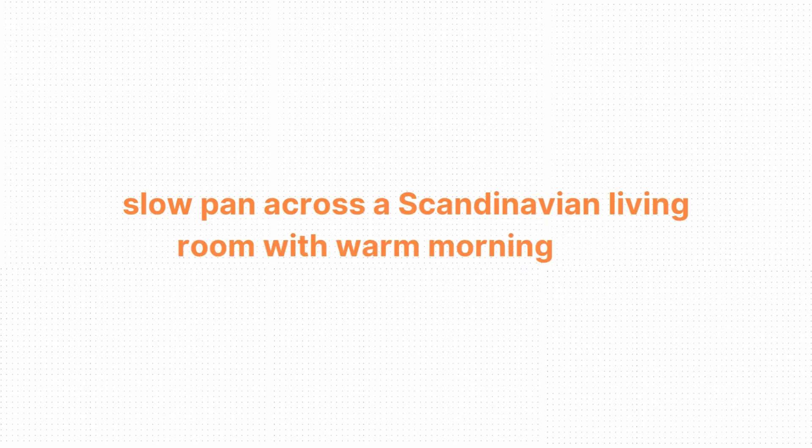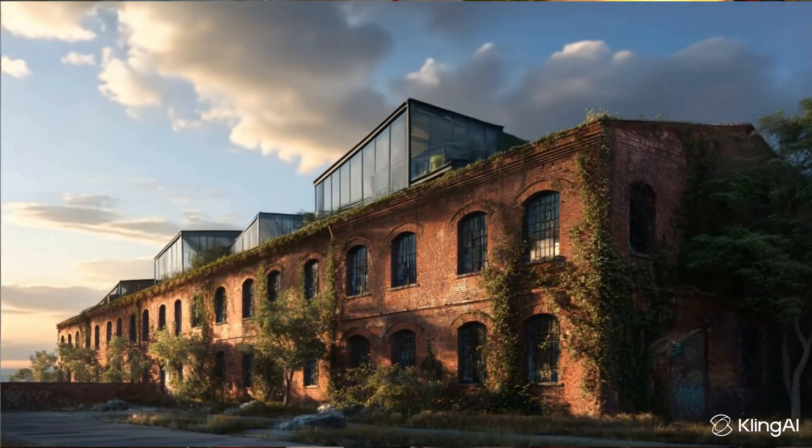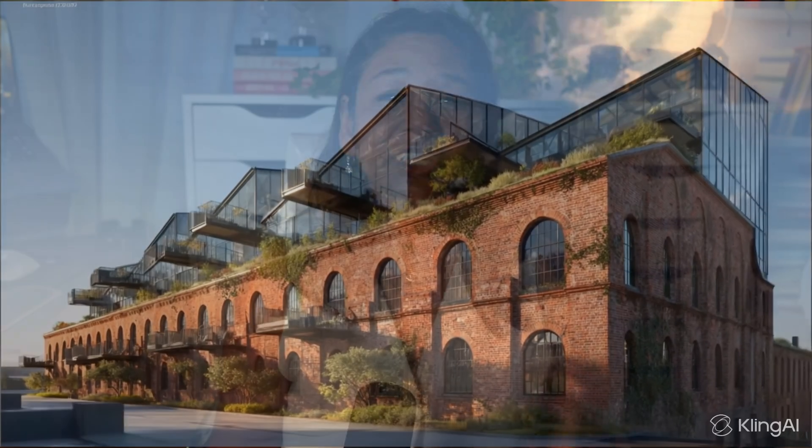Think of AI video as having a camera you can describe instead of operate. You write a prompt like 'slow pan across a Scandinavian living room with warm morning light' and the AI turns it into motion. You can start from scratch with text or from an image you already have — maybe a render, a mood board, or a photo of your project. Then the AI animates it, adding movement, light, and atmosphere. But just like in design, the results depend on how clearly you direct it. You often need a few takes to get it right, and that's completely normal and part of the experimentation process.